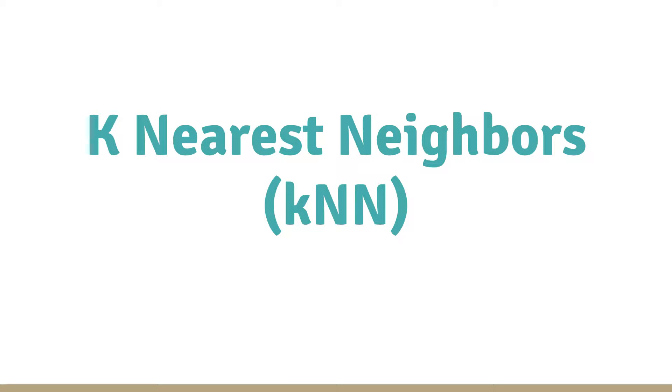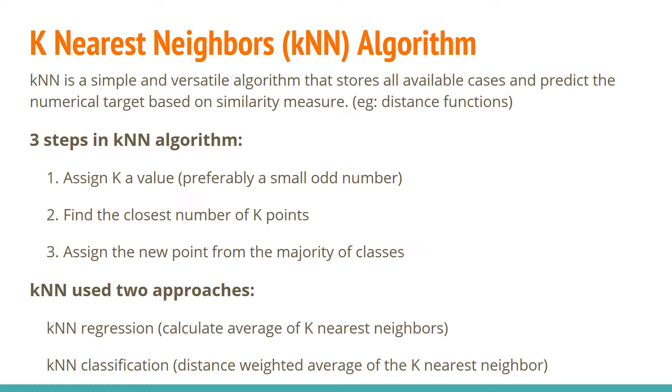Let's first talk about k-nearest neighbor algorithm. KNN is a simple, versatile algorithm that stores all available cases and predicts the numerical target based on similarity measures. A case is classified by a majority vote of its neighbors, with the case being assigned to the class most common amongst k-neighbors measured by a distance function. If k equals 1, then the case is simply assigned to the class of its nearest neighbor.